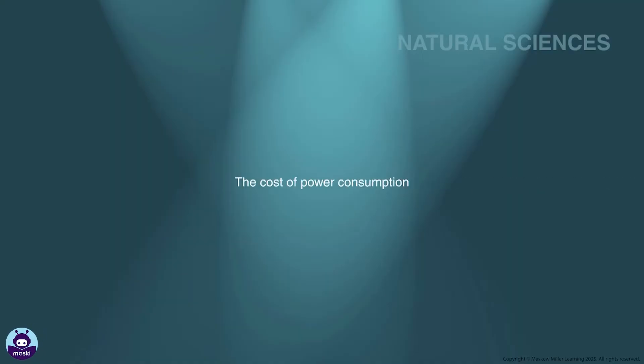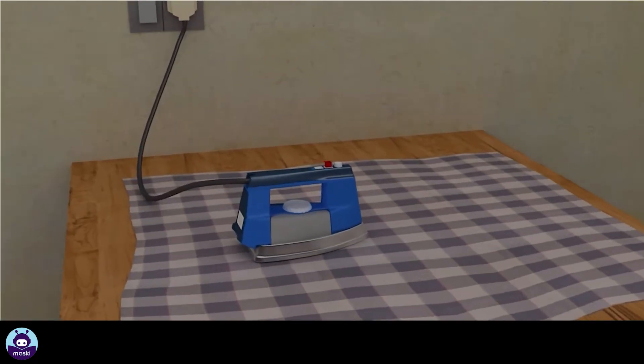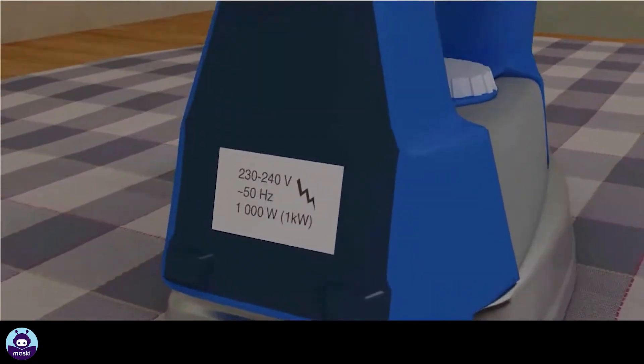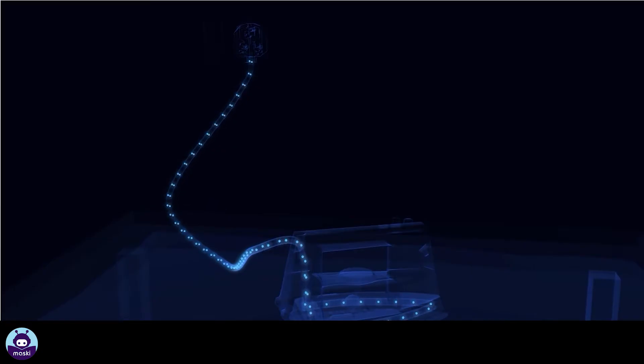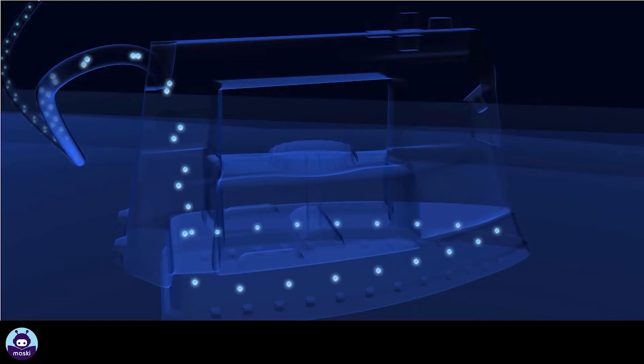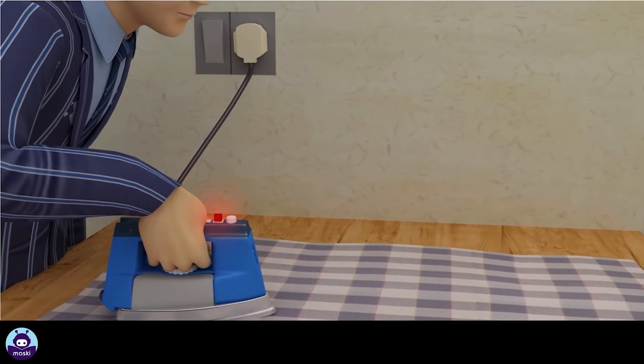The cost of power consumption. Let's take a closer look at the label printed on this electric iron. We say that the electric iron has a power rating of 1000 watts or one kilowatt. Electrical power is measured in watts (capital W). It is the rate of electrical energy supply. It tells us how much energy is supplied to an appliance in a certain amount of time.